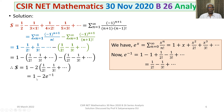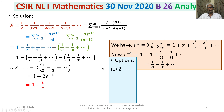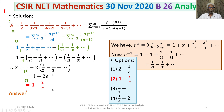Therefore S equals 1 minus 2 times e to the minus 1, which equals 1 minus 2 over e. Looking at the options, our answer 1 minus 2 over e appears as option 2. Therefore our answer is option 2.